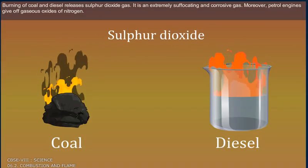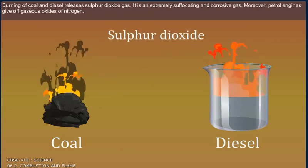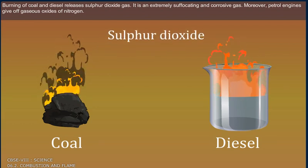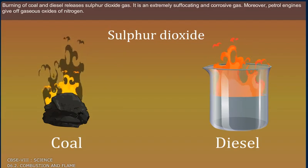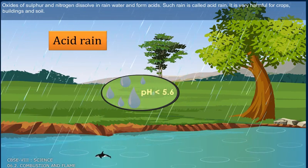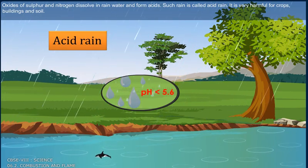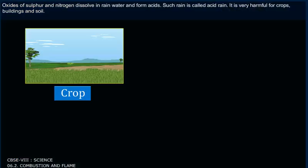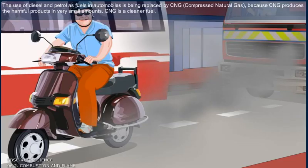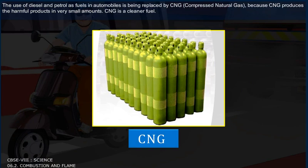Burning of coal and diesel releases sulfur dioxide gas, which is an extremely suffocating and corrosive gas. Moreover, petrol engines give off gaseous oxides of nitrogen. Oxides of sulfur and nitrogen dissolve in rainwater and form acids — such rain is called acid rain, which is very harmful for crops, buildings and soil. The use of diesel and petrol as fuels in automobiles is being replaced by CNG, compressed natural gas, because CNG produces harmful products in very small amounts and is a cleaner fuel.